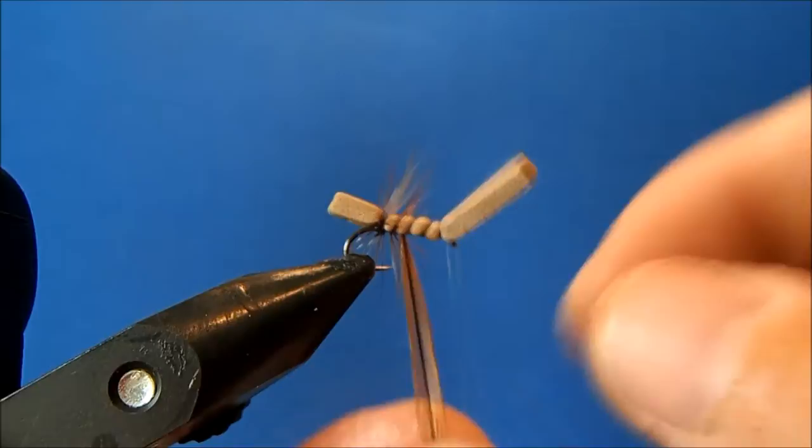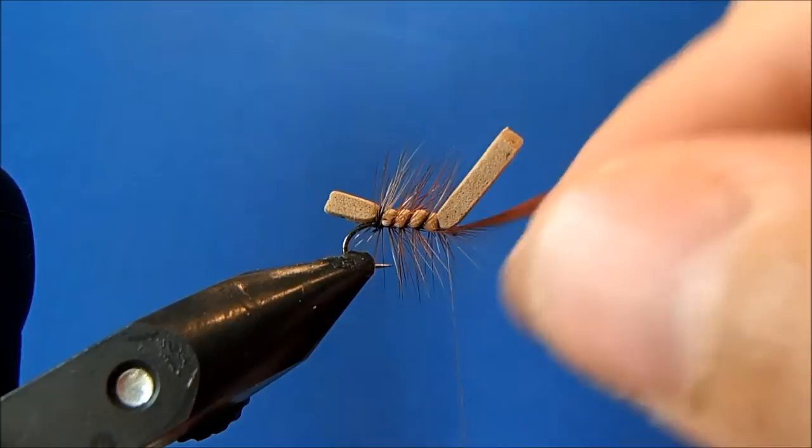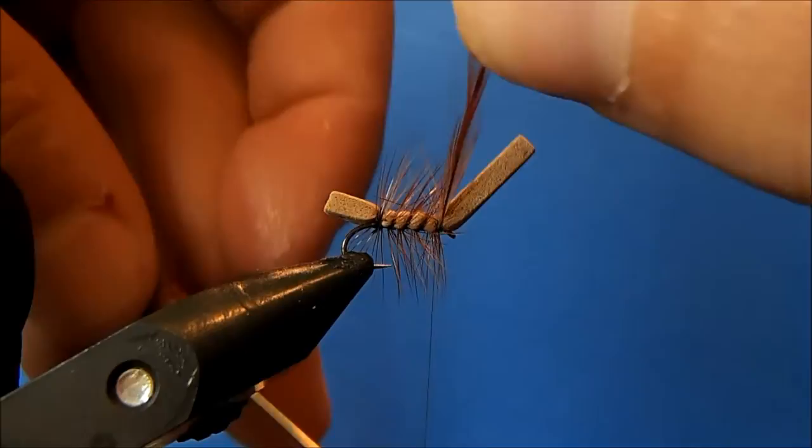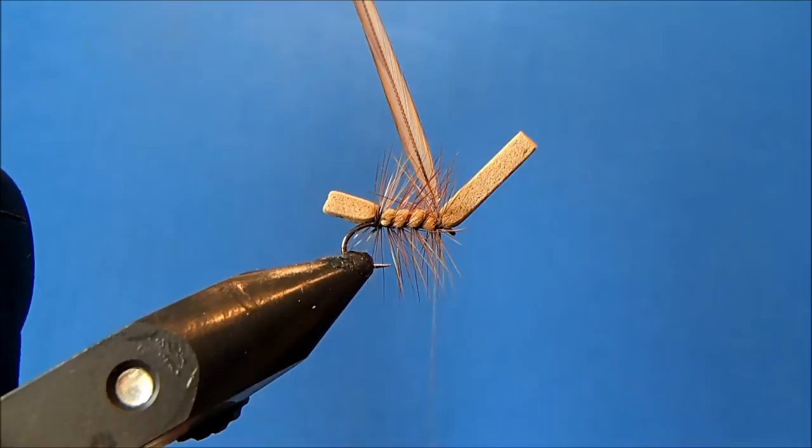And I'll bring my hackle up through the rest of these, and I'm also going to do two wraps—or a wrap and a half, rather—so that my hackle is tied in on the top so that when I cut it off, there's no stem or anything like that hanging off.